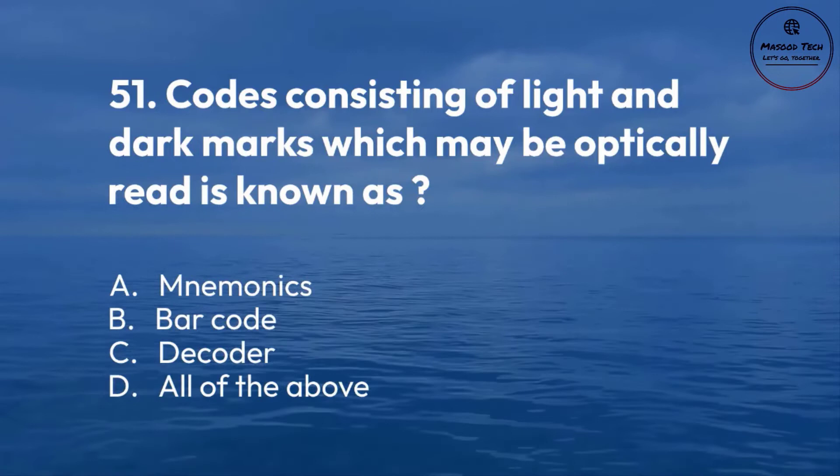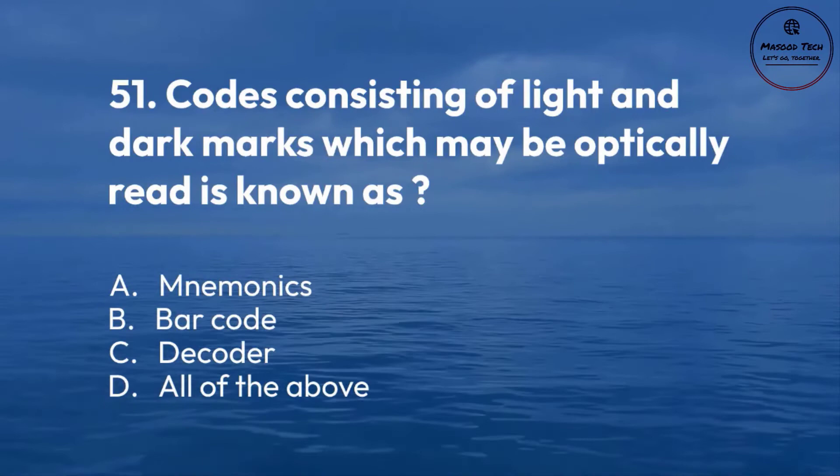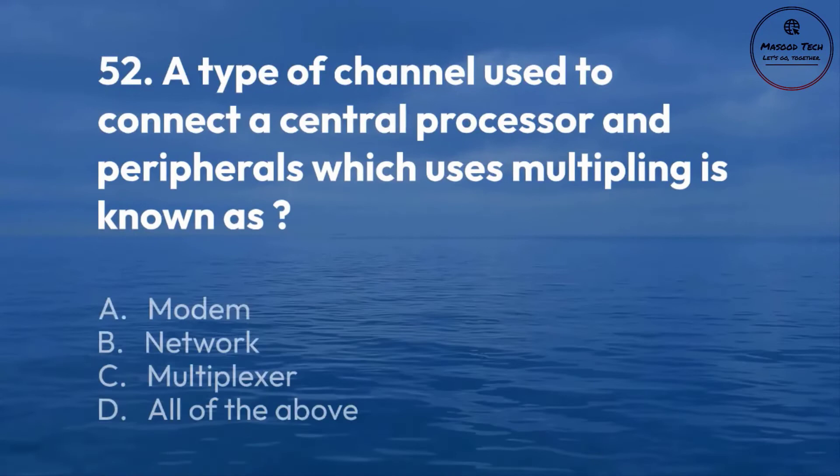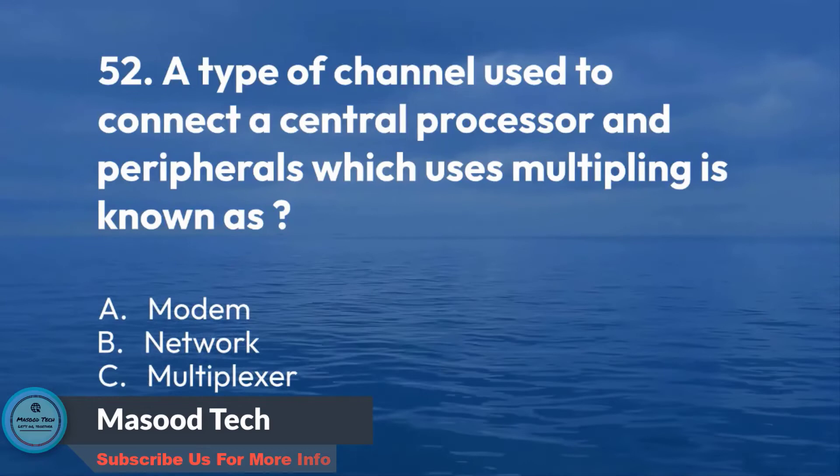Number 52. A type of channel used to connect a central processor and peripherals which uses multiplexing is known as: A. Modem. B. Network. C. Multiplexer. D. All of the above. Correct answer is C.